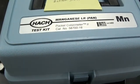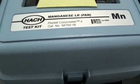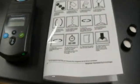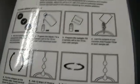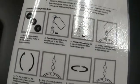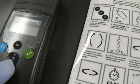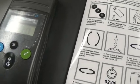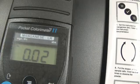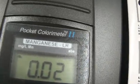I'm going to test my water using this Manganese Low Range Kit. First, I set the instrument to manganese and turn it on. It's set to milligrams per liter.